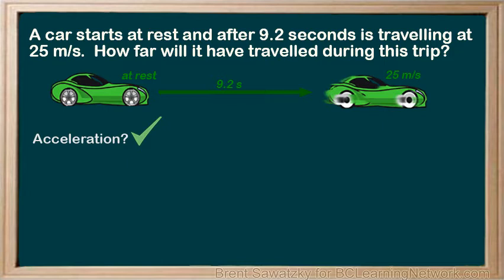The next step in solving a kinematics problem is to list the information. A good strategy for any problem. What do you know and what do you not know? The car starts at rest. Which means that the original velocity must be zero. So let's document that.